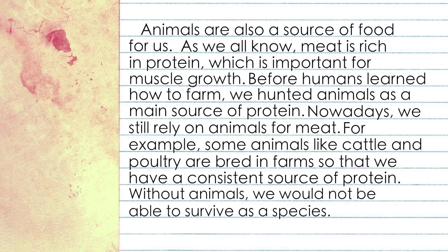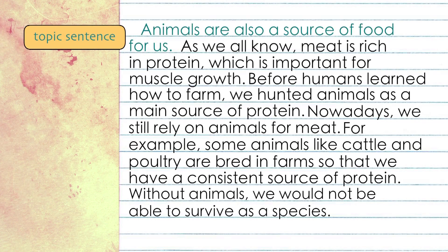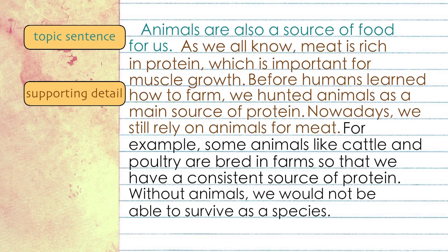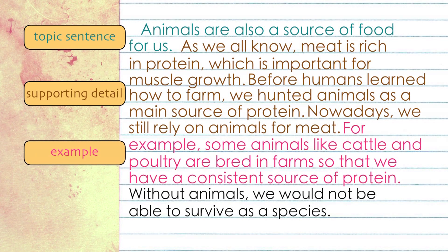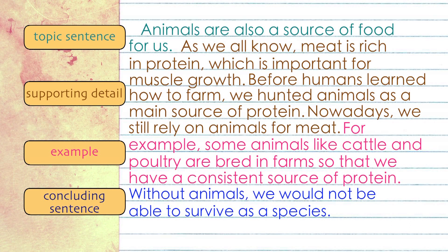Finally, repeat the process again for the third paragraph. This is an example of my third paragraph of the main body. This is the topic sentence — my third main idea is about how animals provide us with food. This is the supporting detail where I explained that we need animals for meat as it is a rich source of protein. Here is my example. I end with a concluding sentence for the paragraph — notice how I stress the importance of animals to human beings.